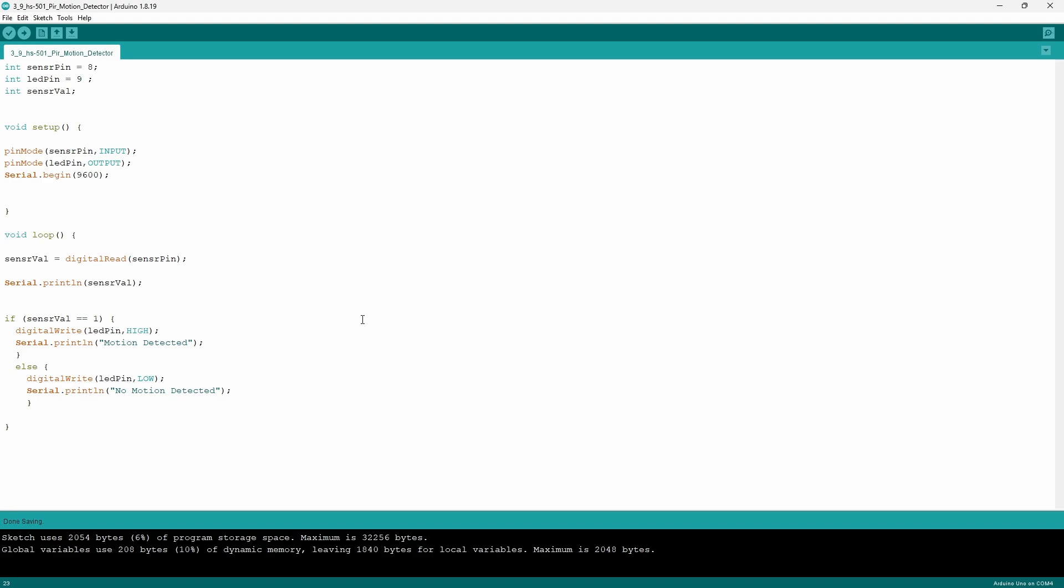Using an else statement which is the other option, if the sensor value is equal to 0 or just not 1, I tell the Arduino to output to the LED a low power. This will turn off the LED if it was on and I tell the Arduino also to print no motion detected onto the serial monitor.